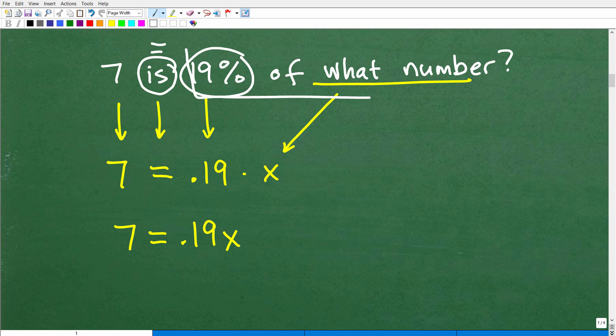So 19% of what number? Well, this number we can represent as x. So we're going to take that decimal and multiply it by that number. So 19% or 0.19 times this mystery number is equal to 7. You've got to be able to translate from a verbal sentence into a variable sentence. And once you do that, then what you have is a super basic algebraic equation that we can solve. So 7 is equal to 0.19x.